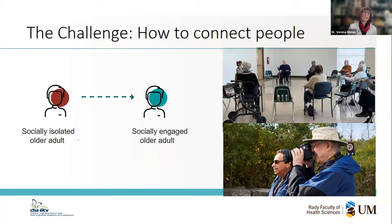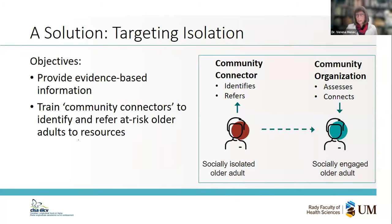How can we get that socially isolated or lonely person socially engaged and connected to the many programs that are actually available out there that could provide some social contact? Our project, which we're calling Targeting Isolation, has two main objectives: one is to provide evidence-based information about social isolation, loneliness, and other aspects of aging, and the other is to train community connectors to identify and refer at-risk older adults to resources in the community.